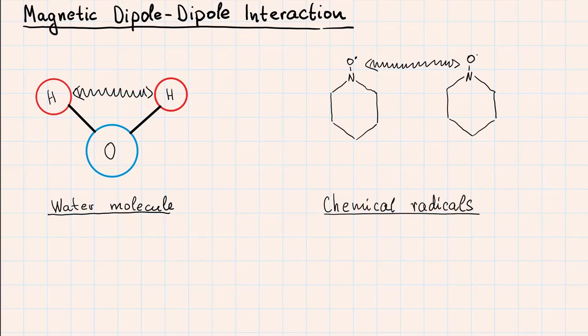There exists an experimental technique which can detect the magnetic dipole-dipole interaction between radicals which are at the distance of 10 to 100 angstrom. This technique is based on the electron paramagnetic resonance EPR. We will keep such system in mind when we talk about magnetic dipole-dipole interaction in this video.